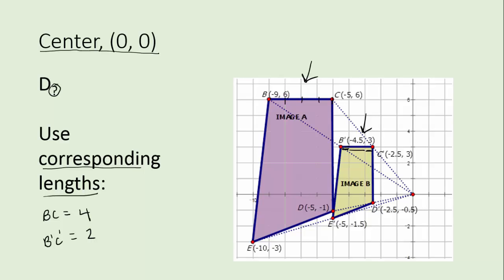Now when you find the scale factor K you're always supposed to put the dilated figure's measurements first. So I got to put the two first and that turns into one half because you got to reduce.